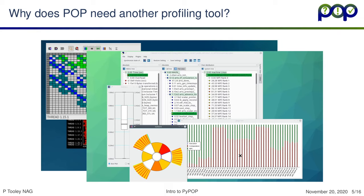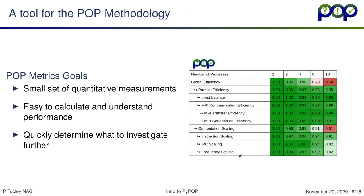The POP methodology and philosophy behind our performance assessments is that we begin by taking a much higher level view. This high-level view is essentially the POP metrics. We've designed the POP metrics to condense all this detailed information into the smallest possible set of quantitative measurements that give a good idea of what's actually going on in the application. The goal is that they should be easy to calculate, easy to understand, and quickly signpost you to where to look in more detail.